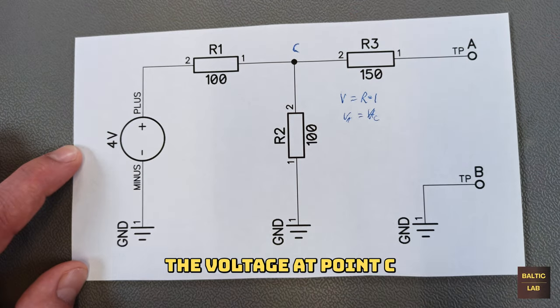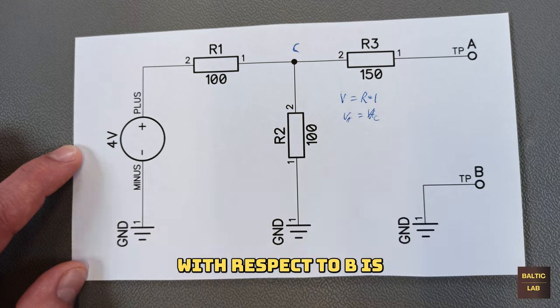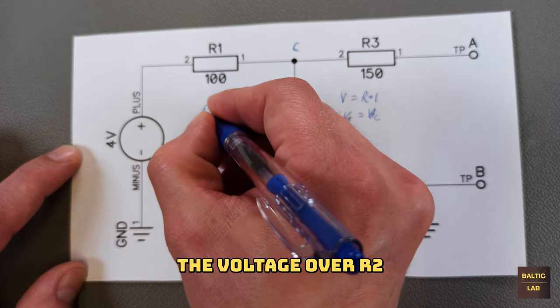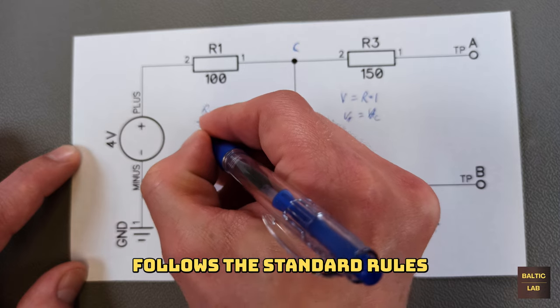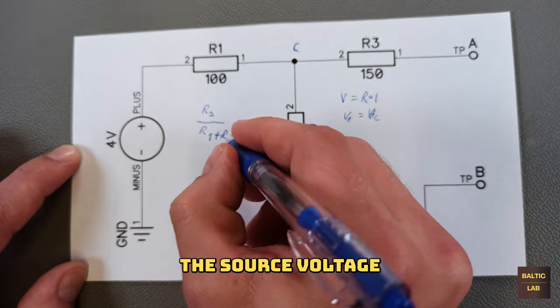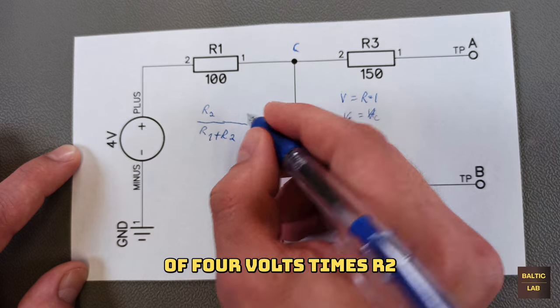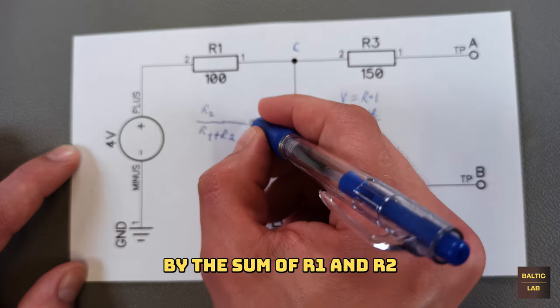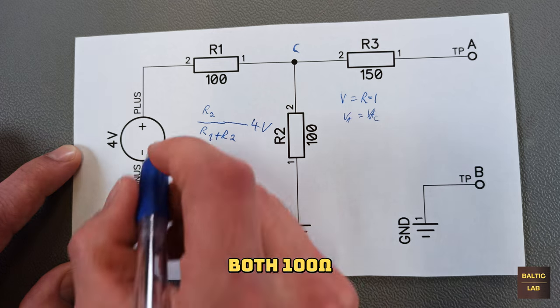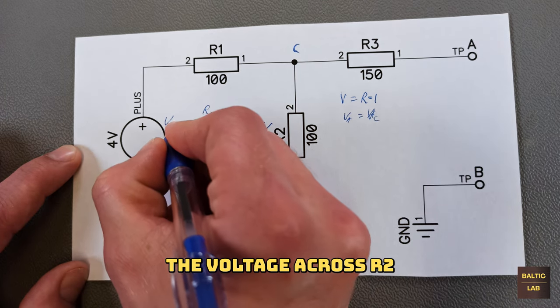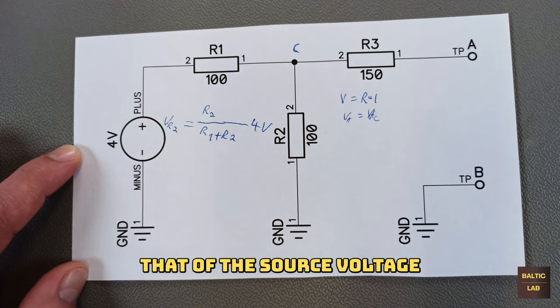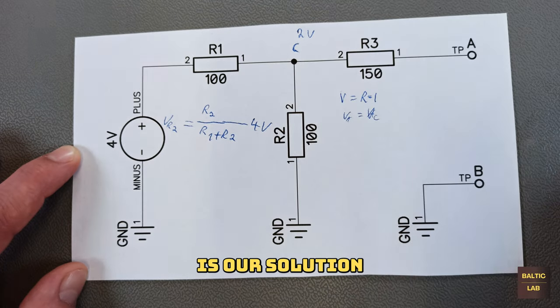The voltage at point C with respect to B is of course the voltage over R2. The voltage over R2 of course follows the standard rules for voltage dividers, which in this case is the source voltage of 4 volts times R2 divided by the sum of R1 and R2. Since they are both 100 ohms, experts can immediately see that the voltage across R2 is going to be half of that of the source voltage, so 2 volts is our solution.